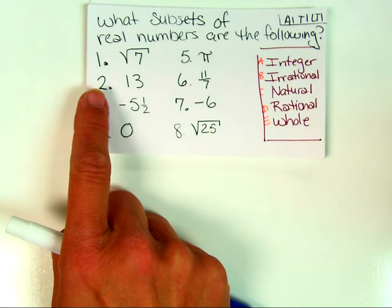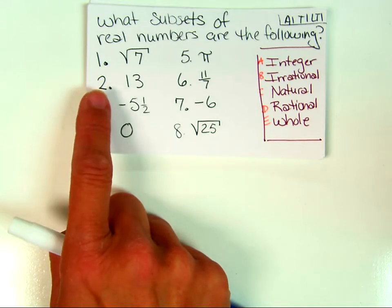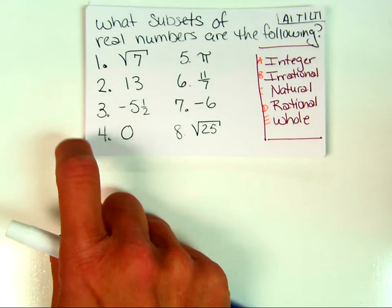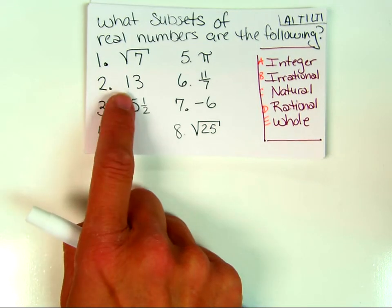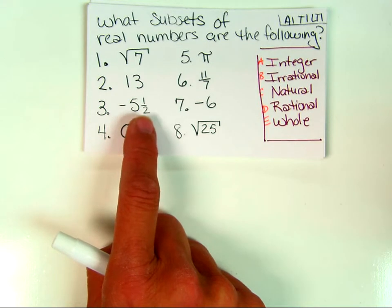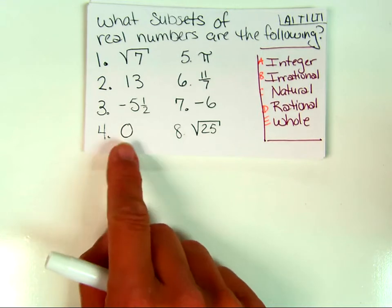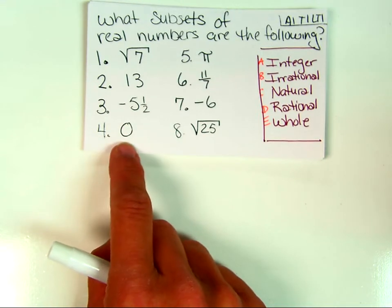Thirteen has no fractional parts and no negative, so it is a natural number. But because it's natural, it's also a whole number, an integer, and a rational number — you have to say all four on the test. A fraction automatically tells you it's rational — positive or negative doesn't matter. Zero is a whole number, so it's also an integer and a rational number.